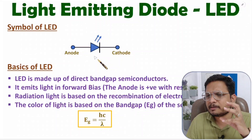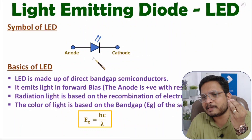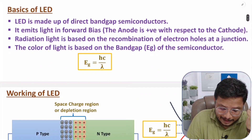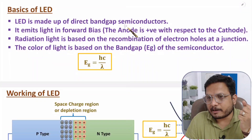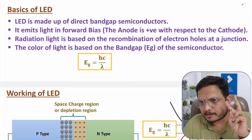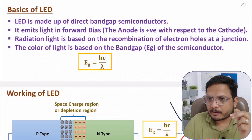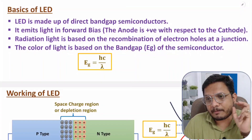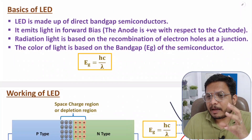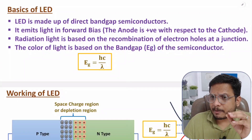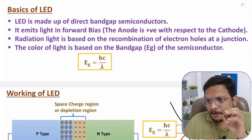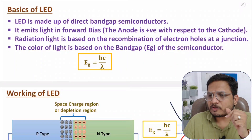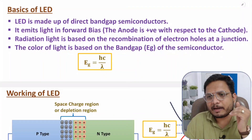Before we see working, you should have some basic understanding related to how material is there with LED. LED is made up of direct band gap semiconductors. There are basically two types of semiconductors: direct band gap and indirect band gap. In indirect band gap, we have silicon and germanium. In direct band gap, we have compound semiconductors. To understand direct band gap and indirect band gap, I have made one separate video available in the electronic devices playlist.